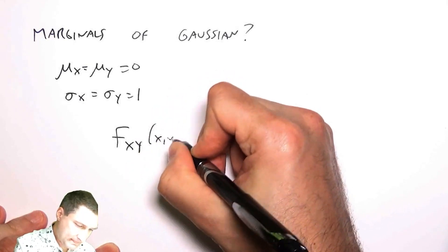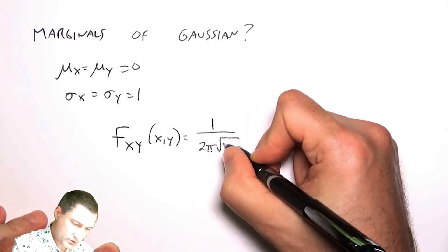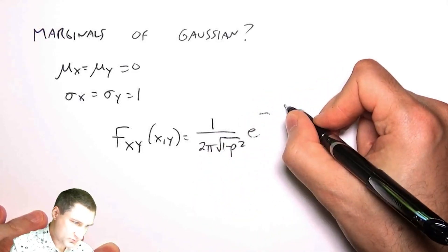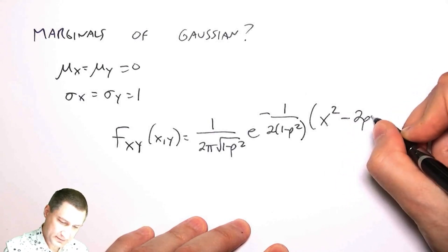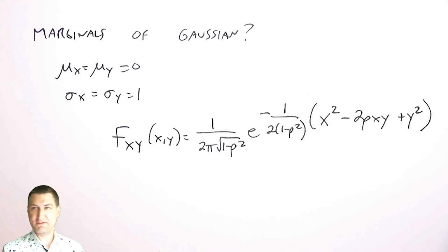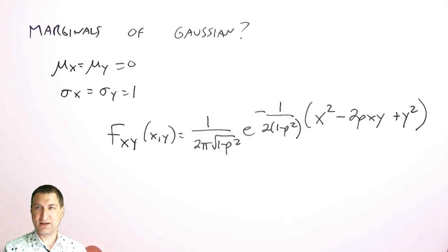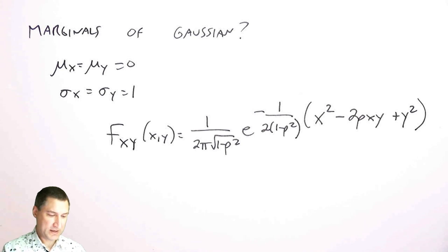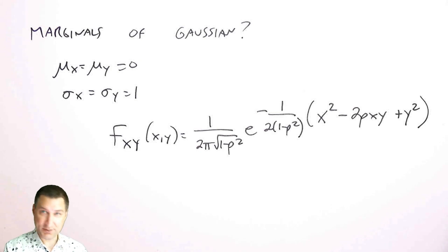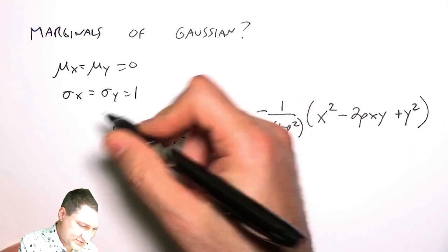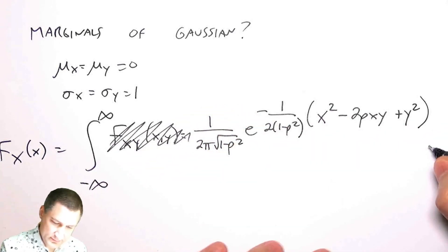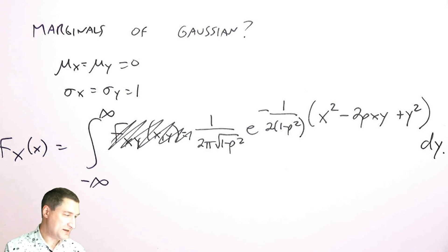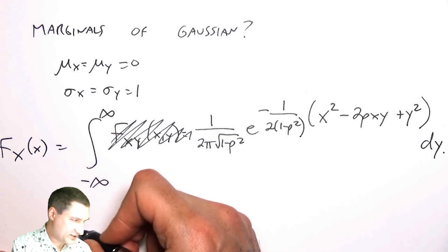With those simplifications, the PDF becomes 1 over 2 pi times the square root of 1 minus rho squared, times e to the minus 1 over 2(1 minus rho squared), with a cleaner exponent since sigma equals 1. If I want the marginal in x, I take this PDF and integrate out y — which is not a very appealing prospect, but it turns out that using some cute tricks I can actually solve it.